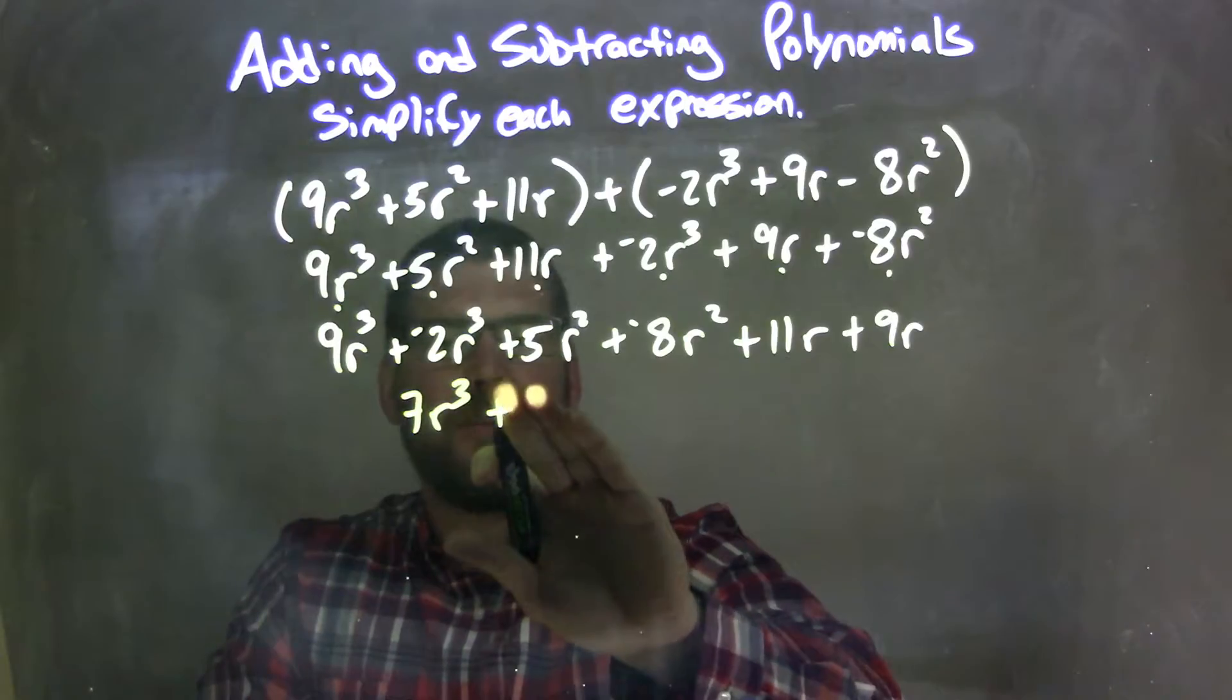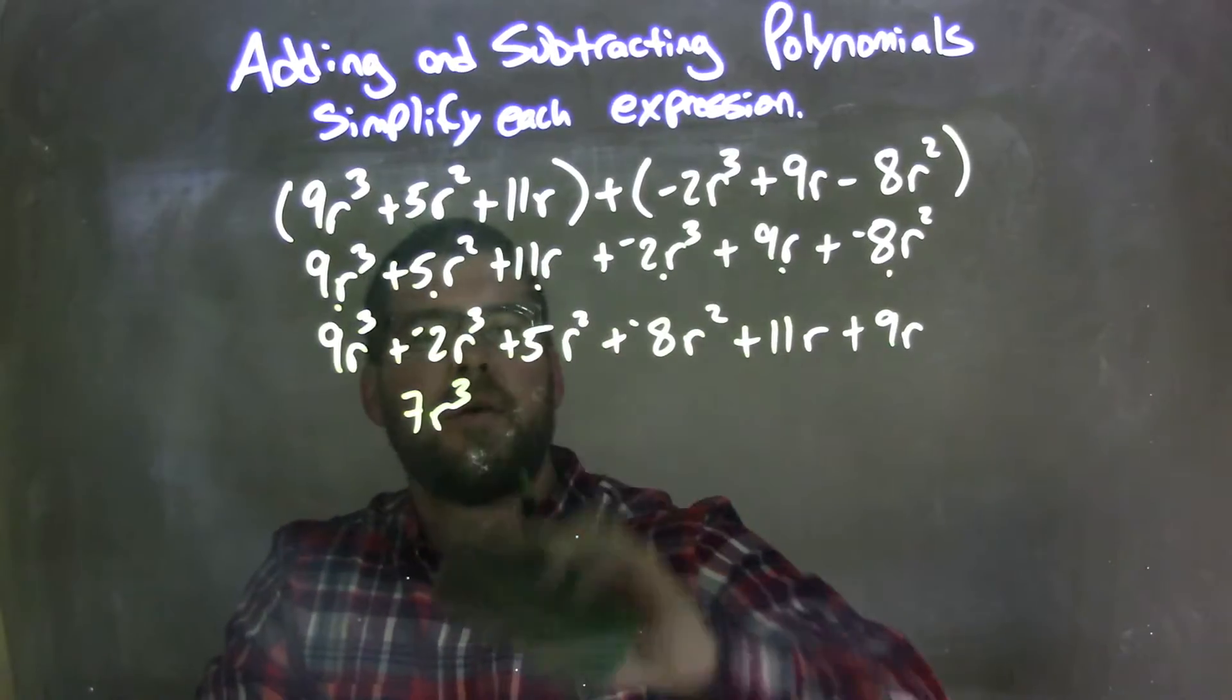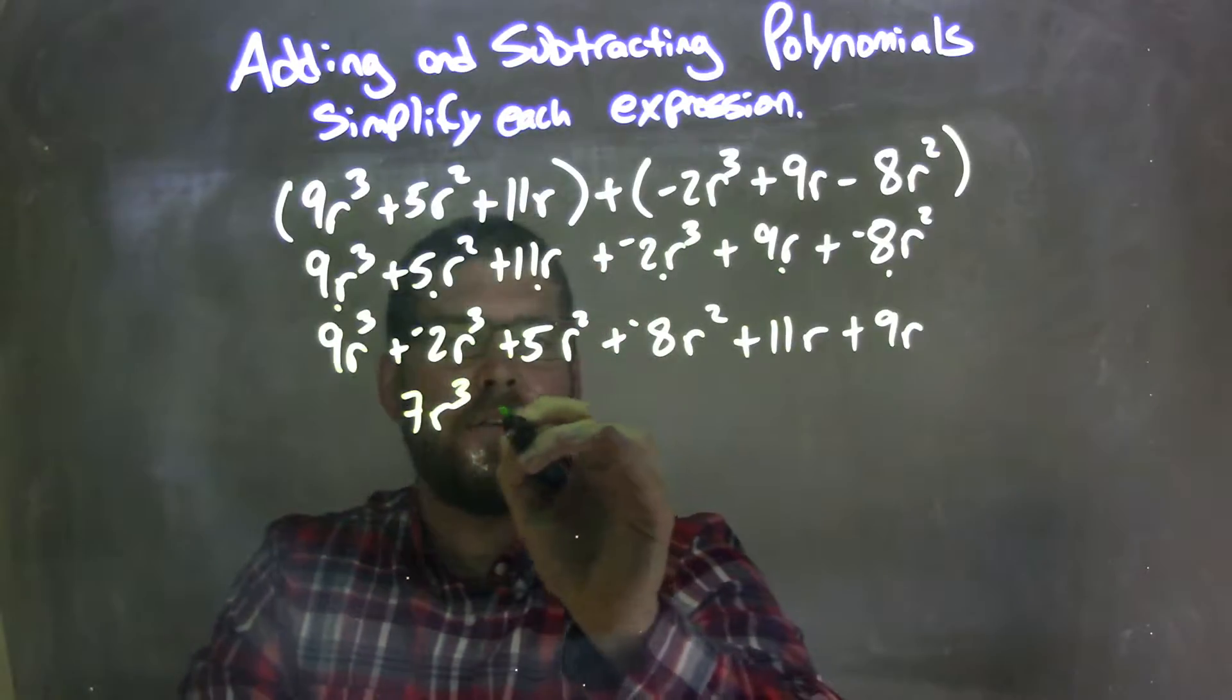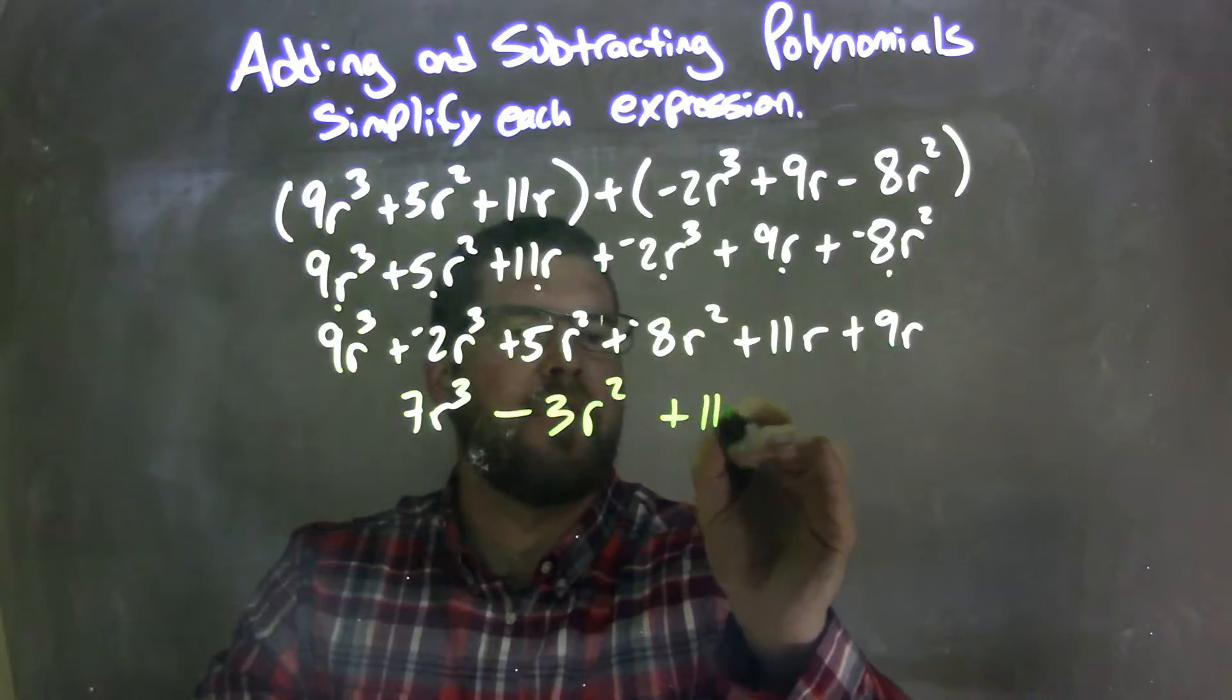So we don't really need the plus sign there. I'm going to make that into, well, so this is a negative 3r², I'm going to do a minus 3r² because this is my final answer here.